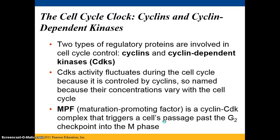The cell cycle clock is regulated by proteins: cyclins and cyclin-dependent kinases, or CDKs. These are both regulatory proteins. CDK activity fluctuates during the cell cycle because it's controlled by cyclins, which get their name from the fact that their concentrations vary across the cell cycle. There's also MPF, or maturation promoting factor — a cyclin-CDK complex that triggers a cell's passage past the G2 checkpoint to enter the M phase.